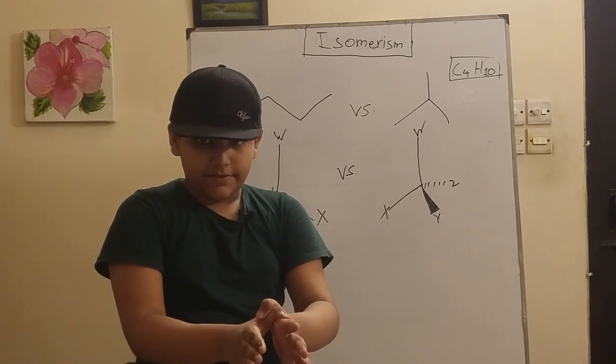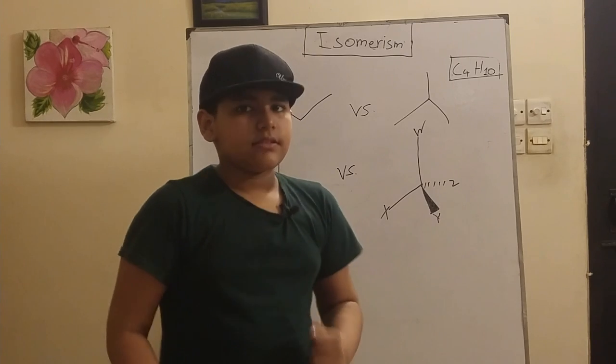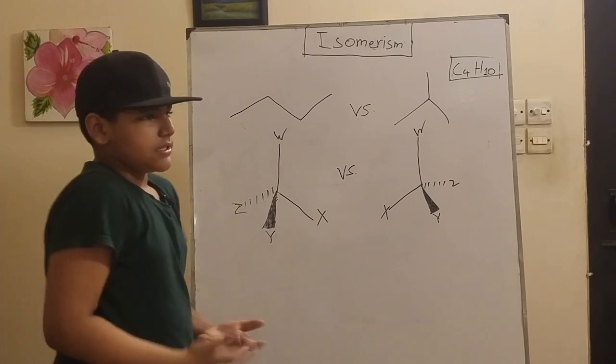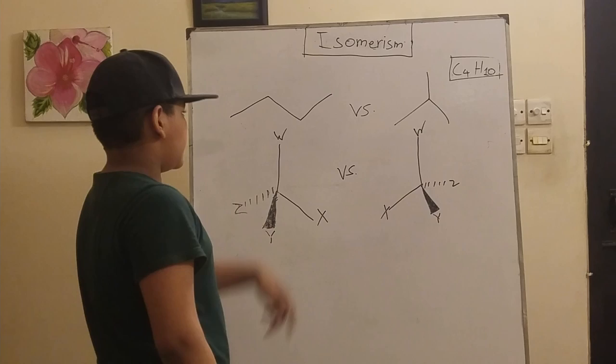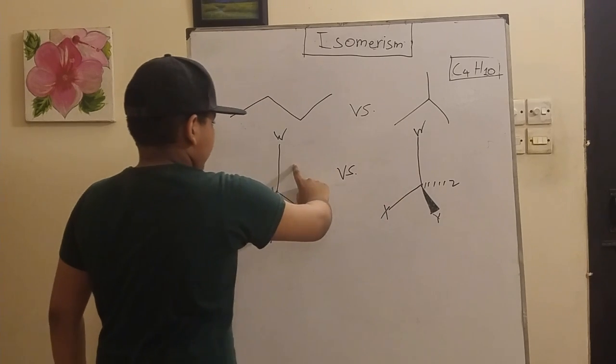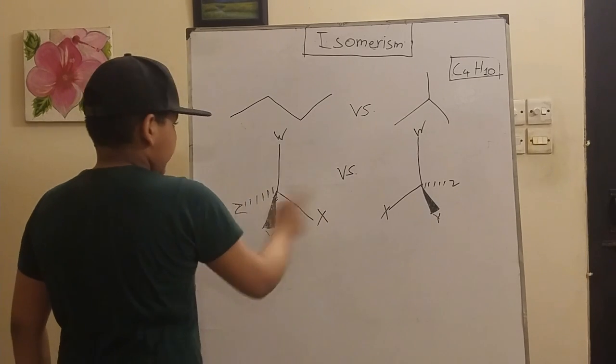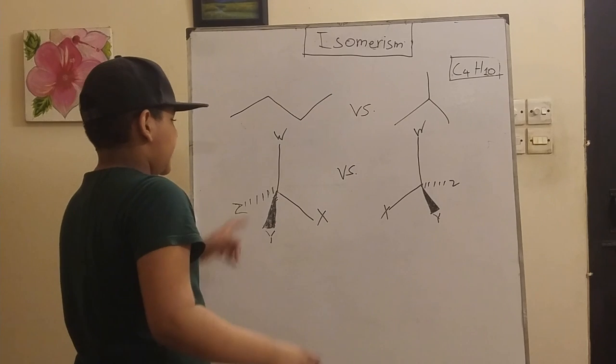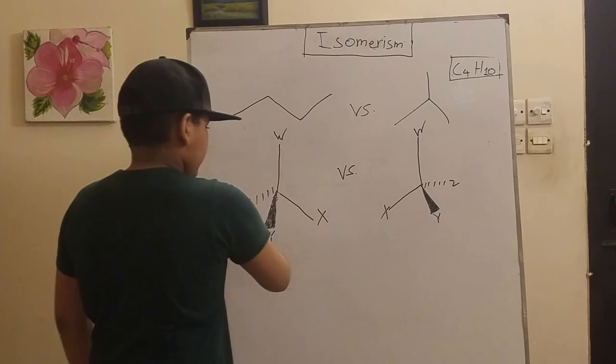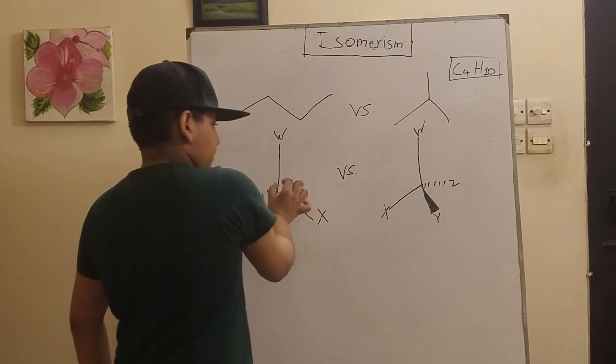For example, these two molecules—it doesn't really matter what atoms are here as long as it's an atom. Now these two molecules, they are stereoisomers because they are the same molecule. See, they are the same molecular formula, the same connectivity, but they differ in the way they are oriented in three-dimensional space, such as the X going over here and the Z over to the right side and the Y going a bit to the right rather than the left and things like that.